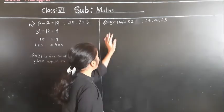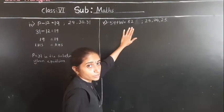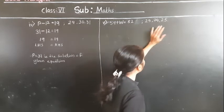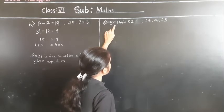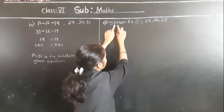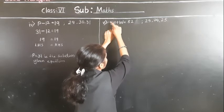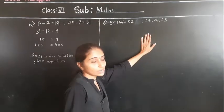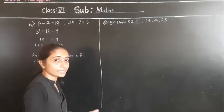Now let's solve the next example: 59 plus W is equal to 82. These are the given numbers: 23, 24, and 25. At the unit place it is 9, and since addition is given, 9 plus 3 is 12, carry 1. Then 5 plus 2 plus 1 is 8. So using 23 — putting W equal to 23 — gives the answer.